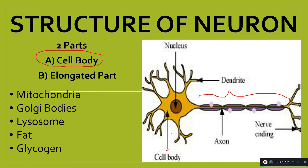The cell body is the part of the neuron which contains a nucleus and cytoplasm, and remains bounded by a plasma membrane. It is round, oval, or star-shaped. The cytoplasm contains mitochondria, Golgi body, lysosome, fatty acids, and glycogen.